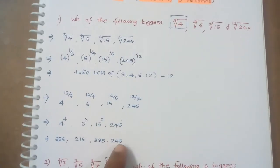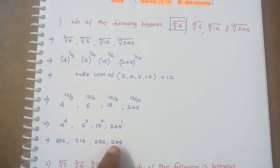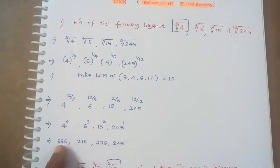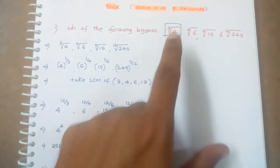So these values are 256, 216, 225, 245. So here they asked the biggest value. The biggest value is 256, that is cube root of 4.